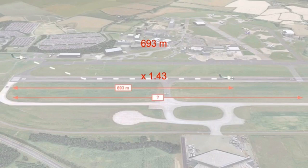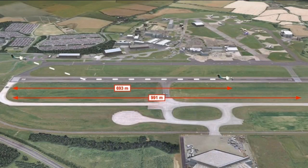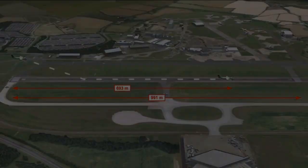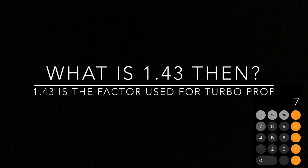Multiplying 693 by 1.43 gives 991 meters. This means if the runway is 991 meters long, the aeroplane lands within 70% of the runway available — so the landing distance required is 693 meters, which is 70% of 991 meters.